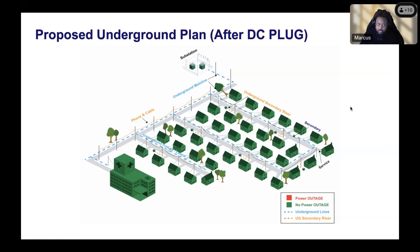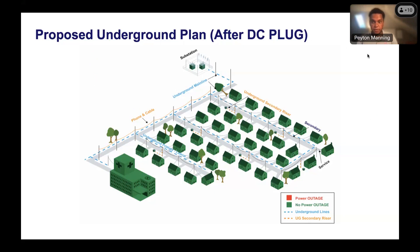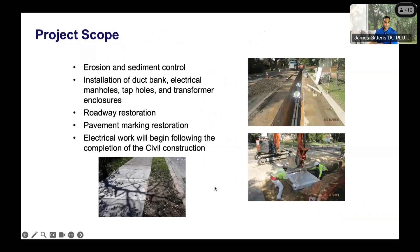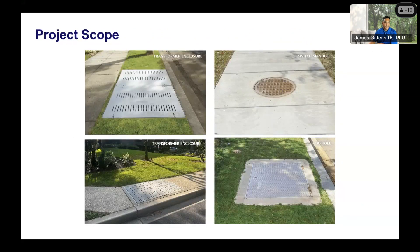On transformer locations: the design is still in progress, but typically transformer placement follows where the overhead transformers currently are. If you look up and see an existing overhead transformer — those gray bucket-like devices on poles — there will likely be an underground transformer installed nearby in the sidewalk.